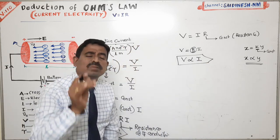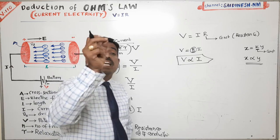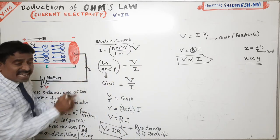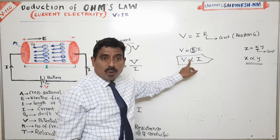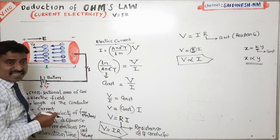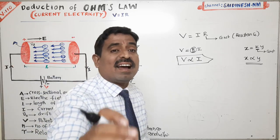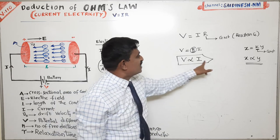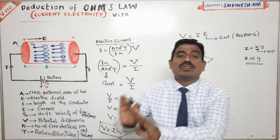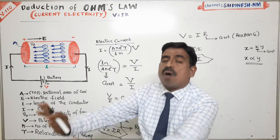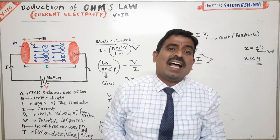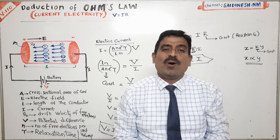This constant we call R, the resistance of the conductor. So finally V equals IR — this is Ohm's law. Resistance is the property of the material that opposes the flow of current in the conductor — just like brakes to a cycle, resistance is the brakes to current flow.